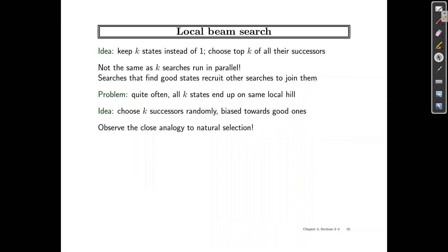After simulated annealing, let's look at local beam search. In local beam search, the idea is that we actually keep not one successor, but we actually keep K different states. And for these, we choose the top K of all their successors. It's not the same as K searches run in parallel because we're doing it at the same time.